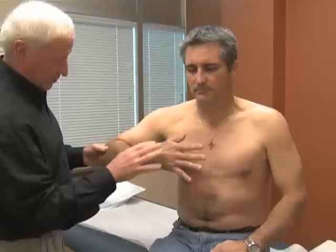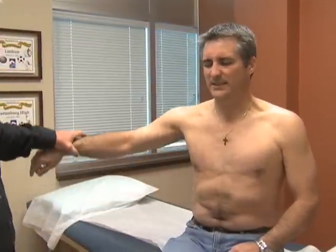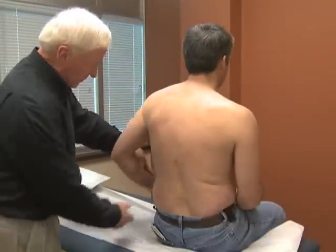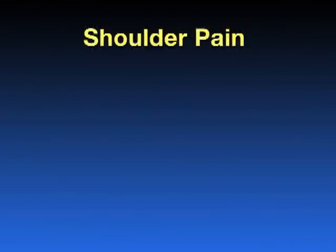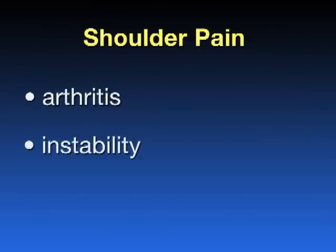When you present to the office, we may go through a series of questions to try to determine if in fact you've had an injury or even had a surgery before. And then we'll go through a detailed exam to look at range of motion, to test the strength of the shoulder, as well as look for any muscle atrophy or swelling. Some of the broad categories of shoulder pain include arthritis, instability, stiffness, as well as a variety of others.